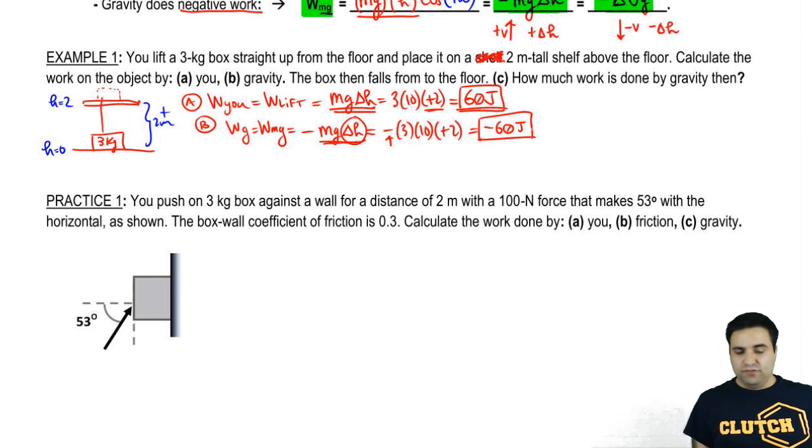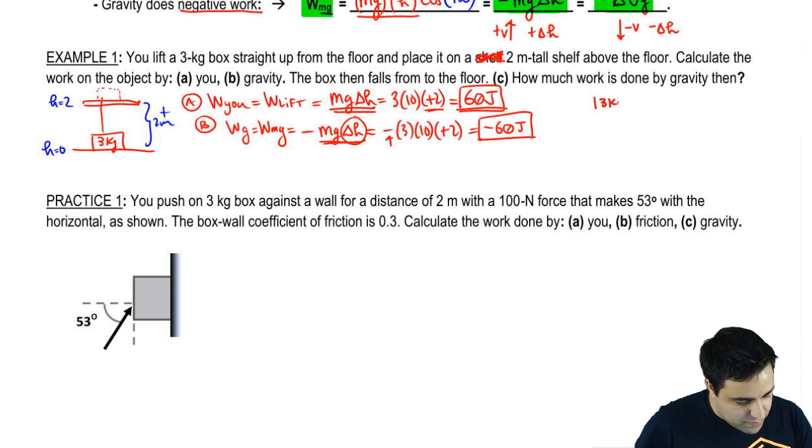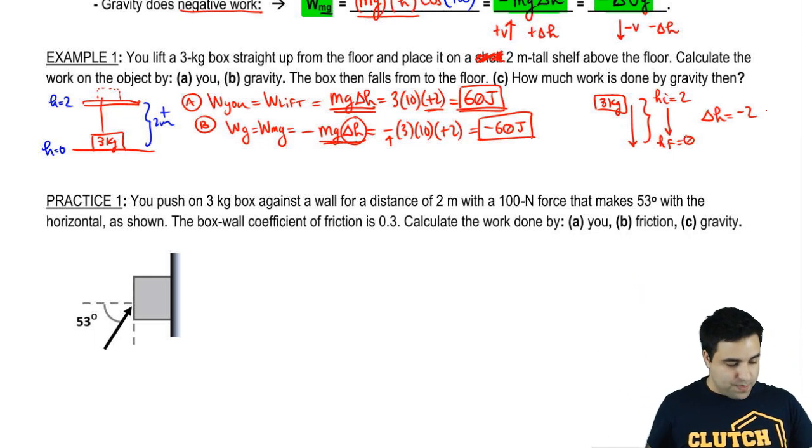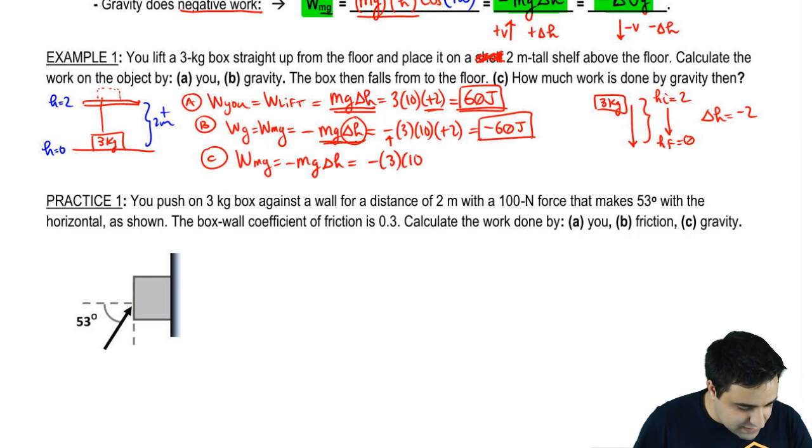It says the box then falls to the floor. How much work does gravity do then? So the box is falling. Here's a 3 kilogram box. It's falling. So I can say the initial height is, the initial height is 0, and I'm sorry, the initial height is 2, and the final height is 0. So what is my change in height? My change in height is negative 2. Why? Because I dropped 2. So if I go here, the work done by gravity is always negative mg h, or mg delta H. Negative 3, gravity we're using 10. My delta H is negative 2 right here.